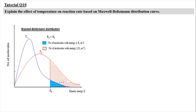At lower temperature we have T1 and at higher temperature we have T2. The number of molecules for T1 and T2 is basically the same, but the graph at T2 is more skewed to the right. This causes more particles to have energy equal to or higher than the activation energy, and hence able to initiate a chemical reaction.